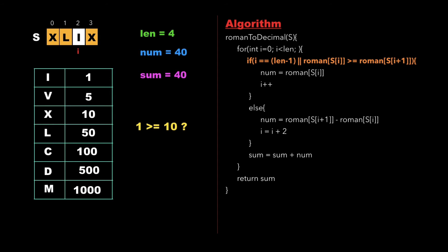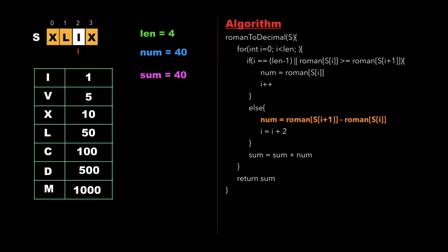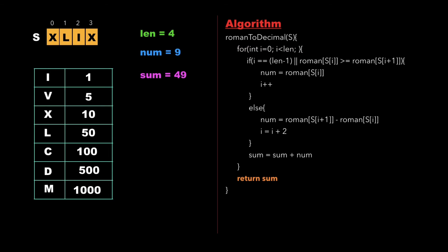Since 1 is not greater than or equal to 10, we again go to the else part where we update num as roman[s[i+1]] minus roman[s[i]], which is 9, and update i as i plus 2. Finally we update sum as sum plus num, giving 49. We then check if i is less than length — since i exceeds the length of the string, we end the for loop and return the value of sum as 49.